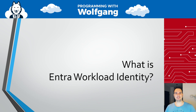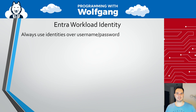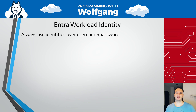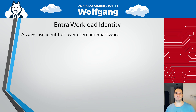So what is workload identity and why would we want to use it? Let's talk about how to authenticate in Azure. We want to use identities over usernames and passwords. A username and password can be leaked, they are complicated to store, to save, to share, so they're not great. A better solution is to use an identity, because an identity is linked to a resource, for example to a VM, and there's no password that can be leaked or shared.